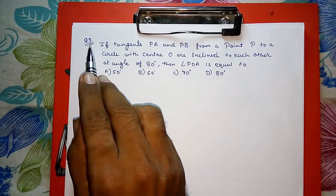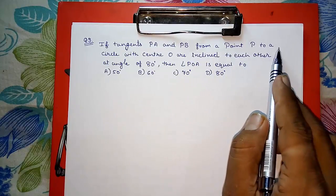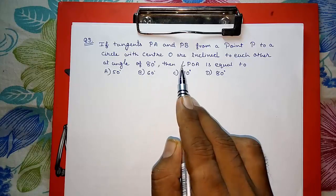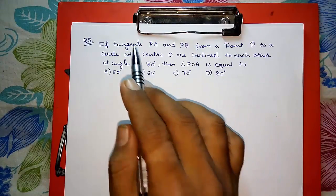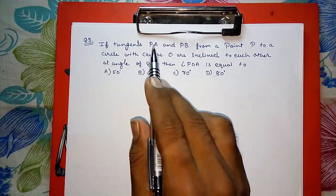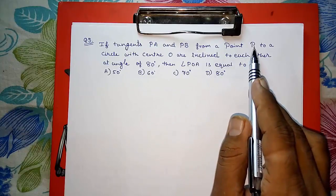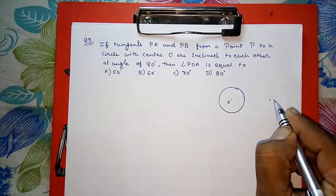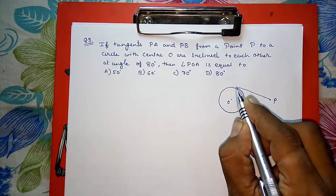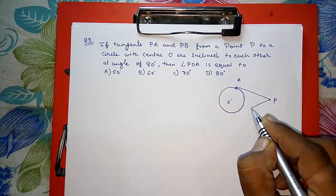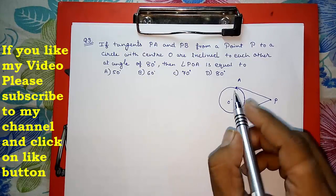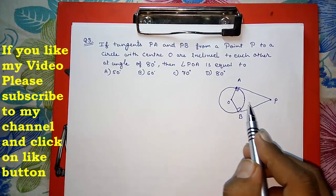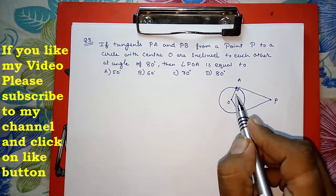Now question number 3. If tangents PA and PB from a point P to a circle with center O are inclined to each other at an angle of 80 degrees, find angle POA. No figure is given, so we draw one: a circle with center O and two tangents PA and PB from point P, joined to center O. By Theorem 10.1, the radius is perpendicular to the tangent, so angles OAP and OBP are each 90 degrees.